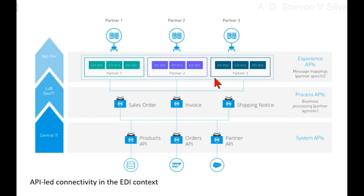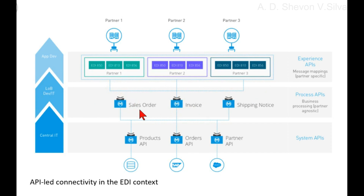Partners 1, 2, and 3 feed into the Experience API layer, which handles message mappings that are partner-specific. The Experience API then interacts with the Process APIs, which handle business processing that is partner-agnostic. The Process API layer contains the sales order, invoice, and shipping notice APIs, which interact with the System APIs below.